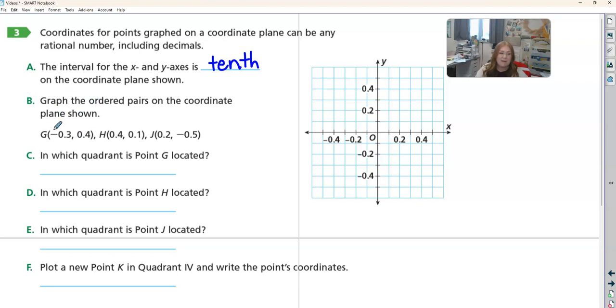So now we're going to graph points G, H, and J. G goes negative 0.3. So here's 1 tenth, 2 tenths, 3 tenths in the negative direction. And then positive 4 tenths: 1, 2, 3, 4. So right here we have G.